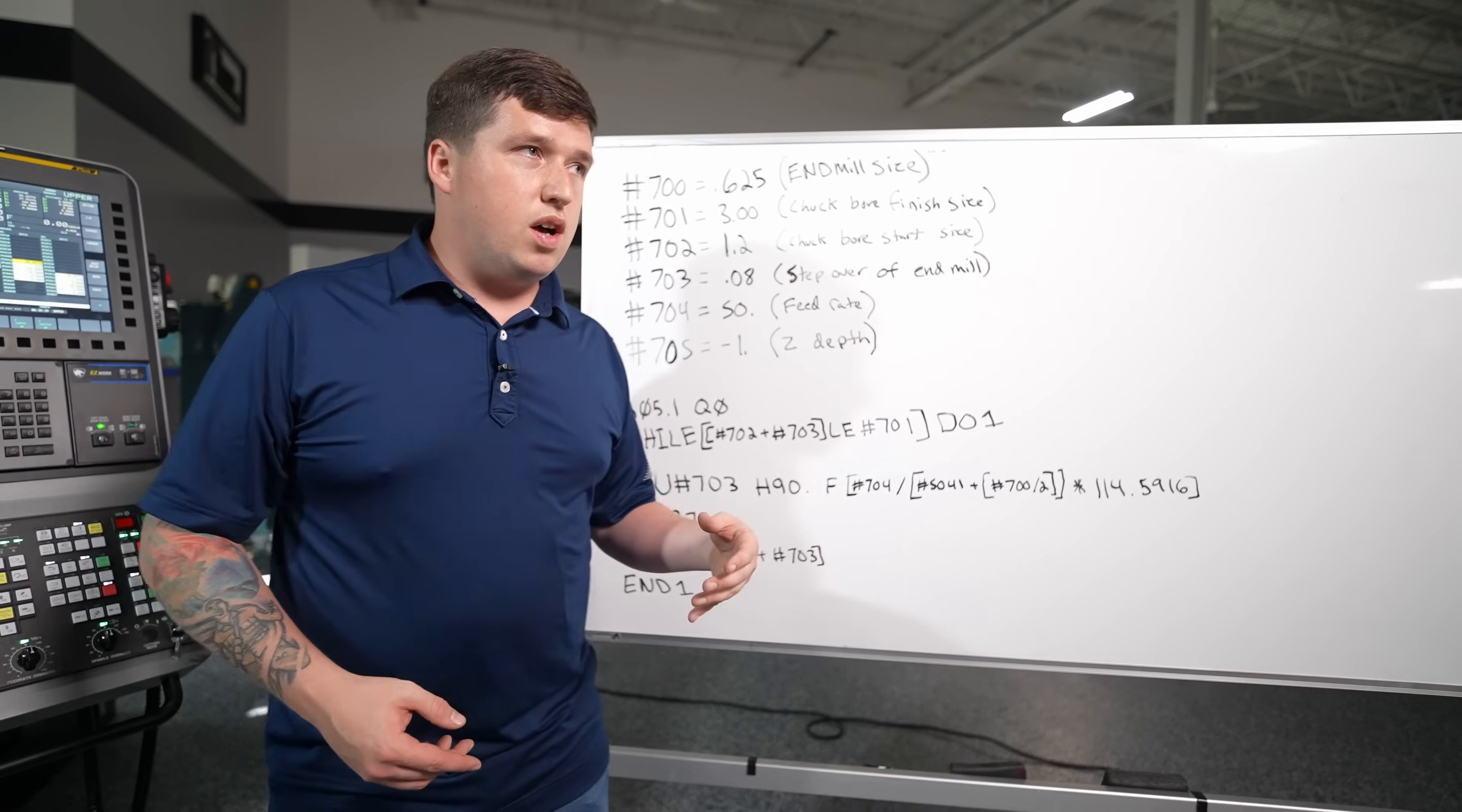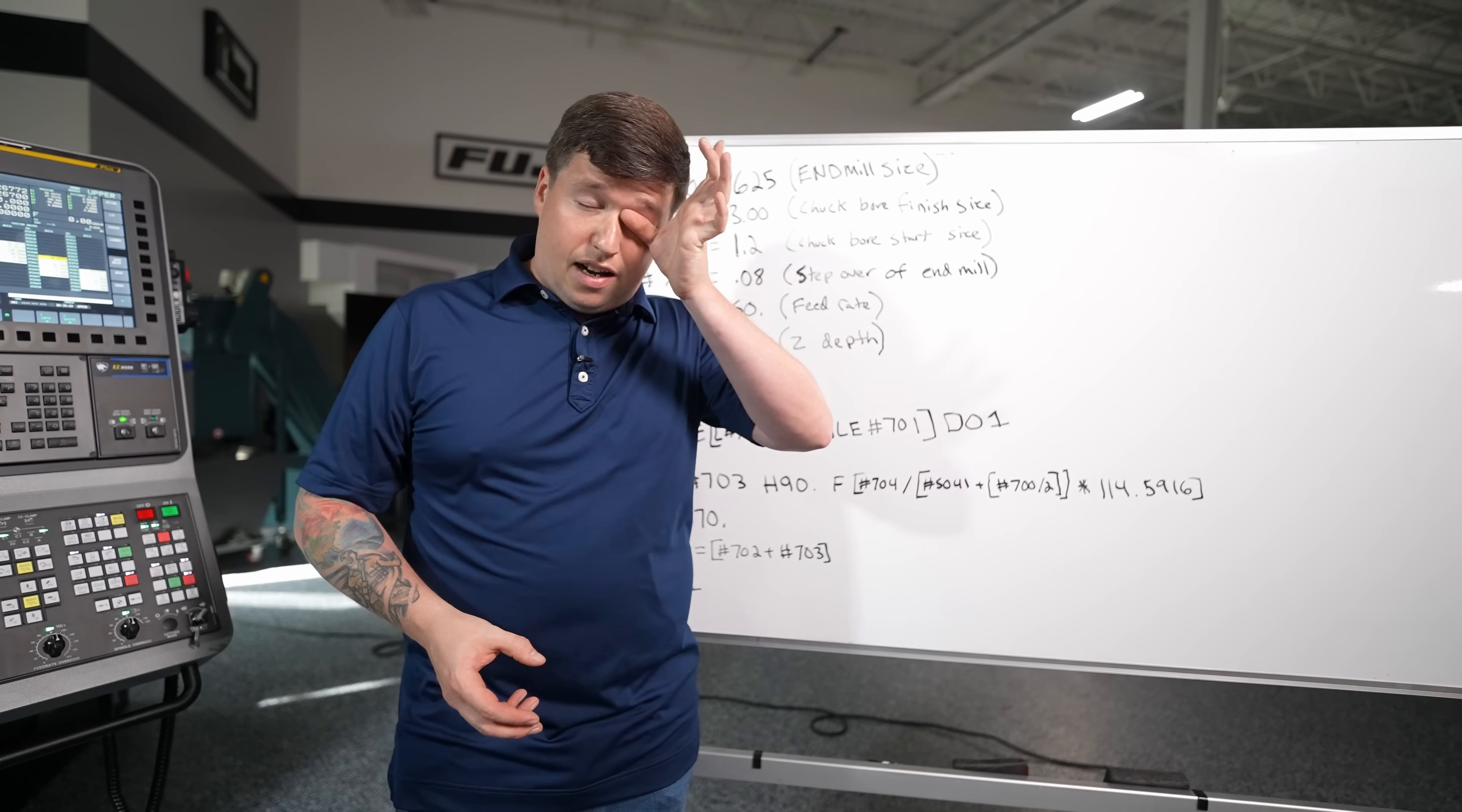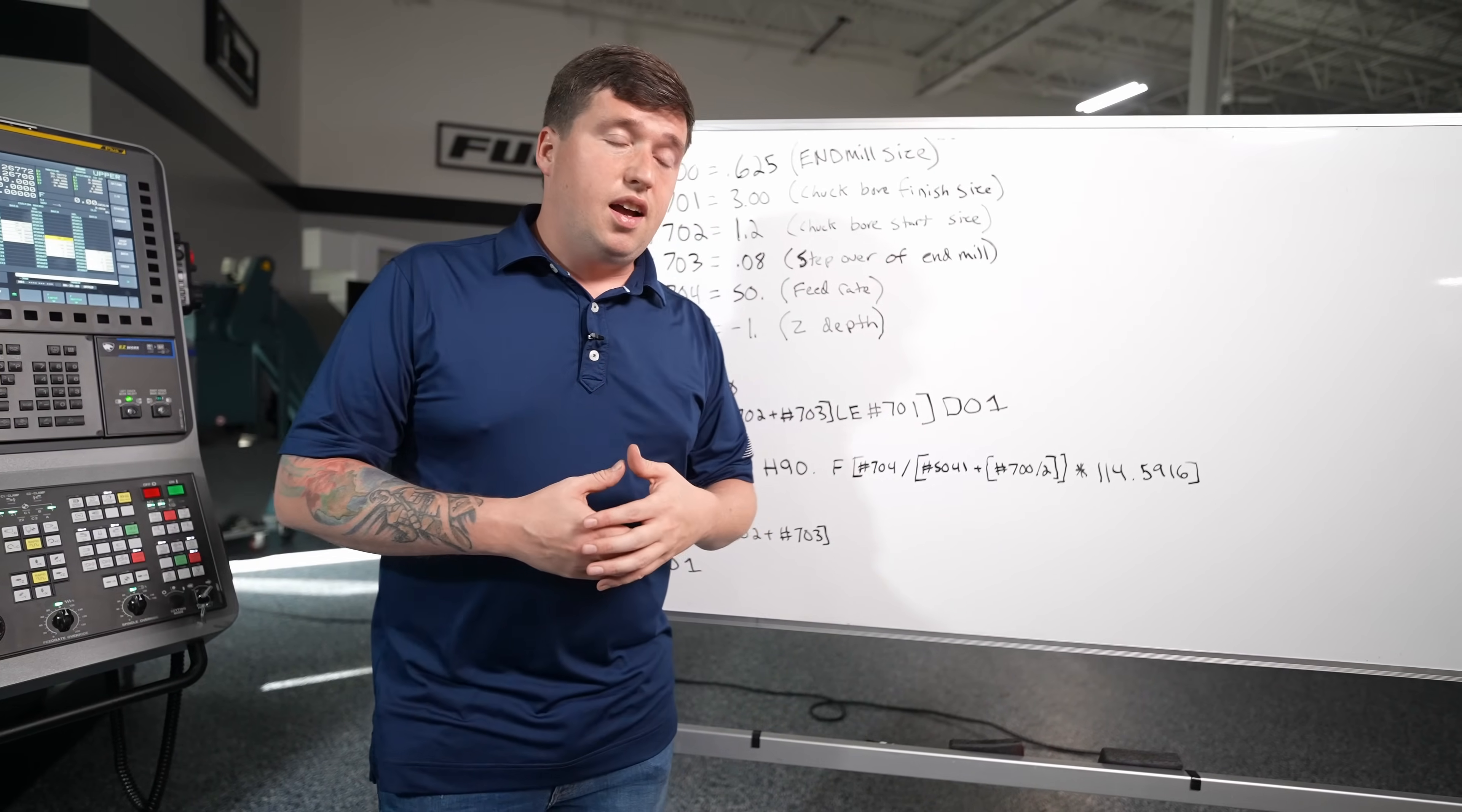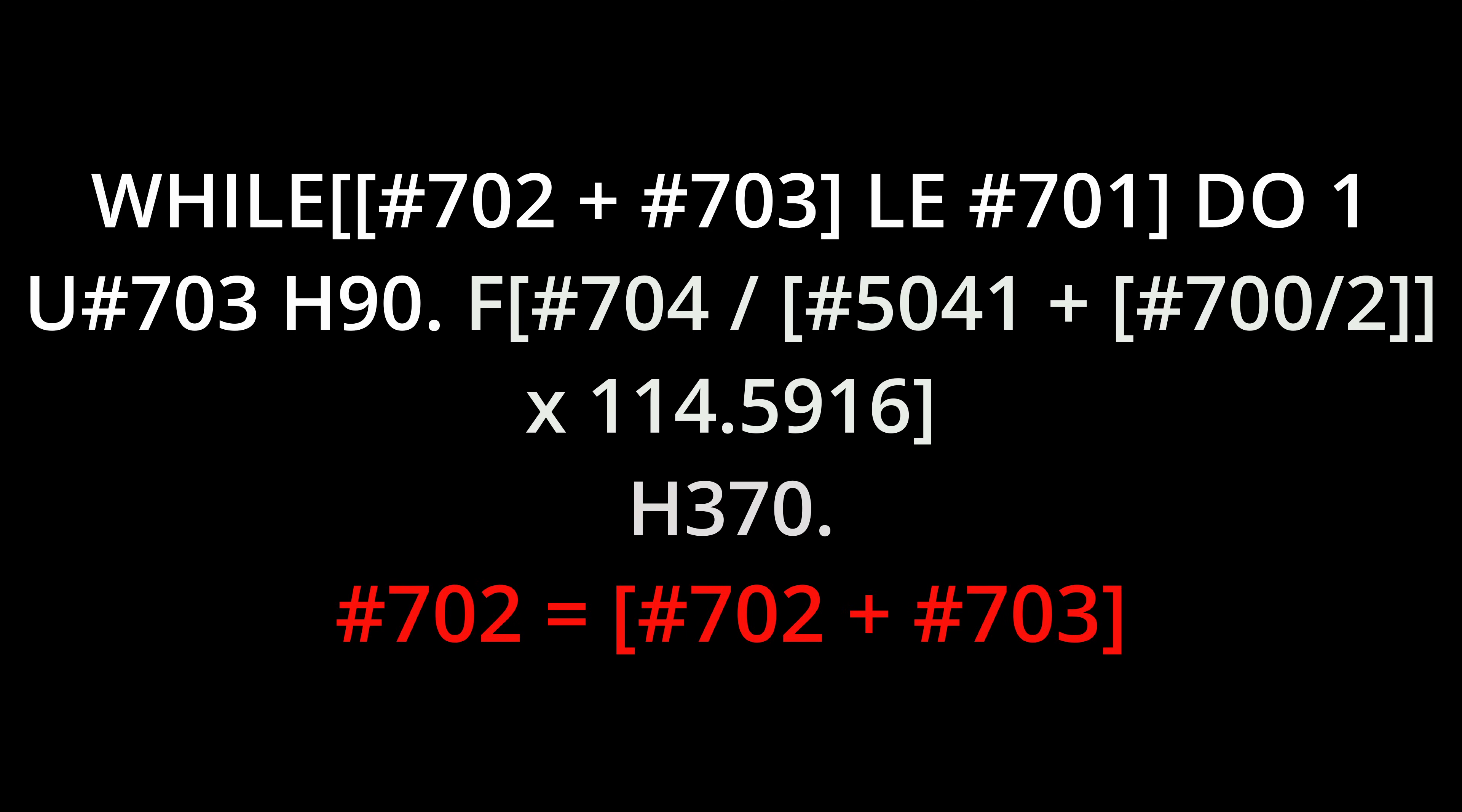Well why not h of 360? Well I want it to go a little bit past 360 degrees. That way it doesn't leave a little bit of a step. I just got something in my eye. All right that way it doesn't leave a little bit of a step. I go 10 degrees past 360 and then it's pretty simple. All I do is I take pound 702 and I say it equals itself plus pound 703. So now my chuck boar start position is going to equal itself plus my step over.